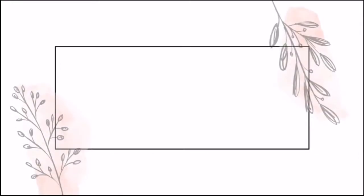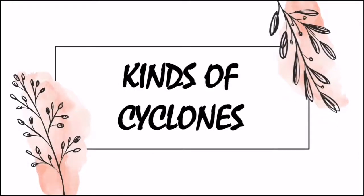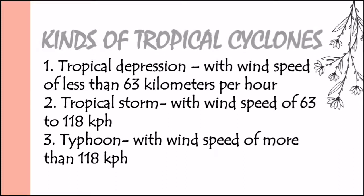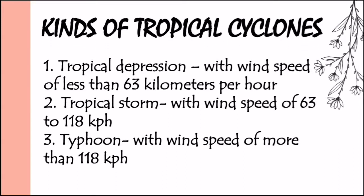There are kinds of cyclones classified according to maximum winds blowing near the center. First, tropical depression has a wind speed of less than 63 kilometers per hour. Tropical storm has a wind speed of 63 to 118 kilometers per hour. And typhoon has a wind speed of more than 118 kilometers per hour.